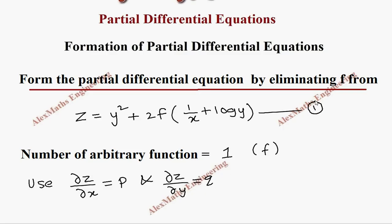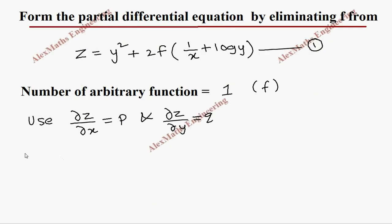Let's take this as the first expression and we are going to differentiate this partially with respect to x. So we are going to get ∂z/∂x equal to - since it is a partial derivative with respect to x, y² is constant which is 0, and 2 is written as it is.